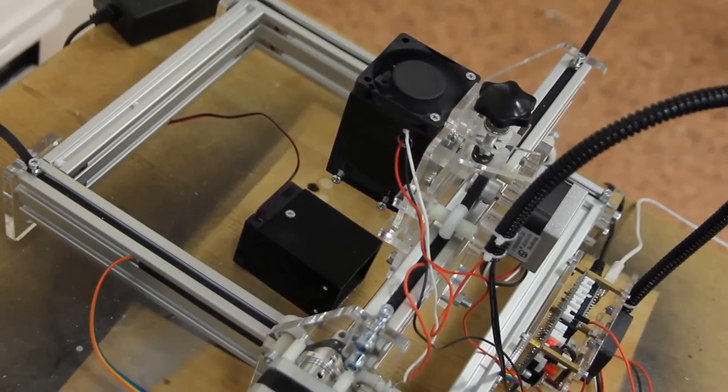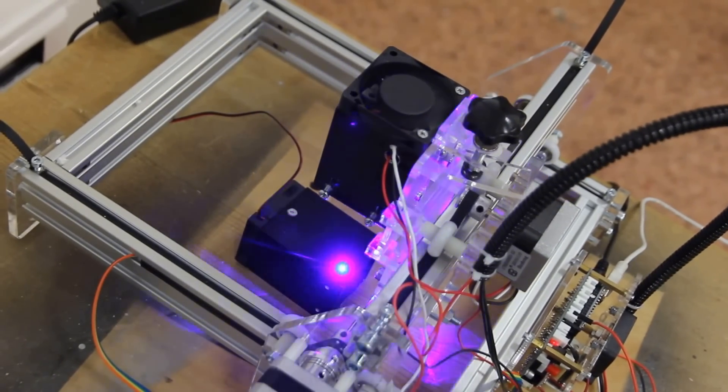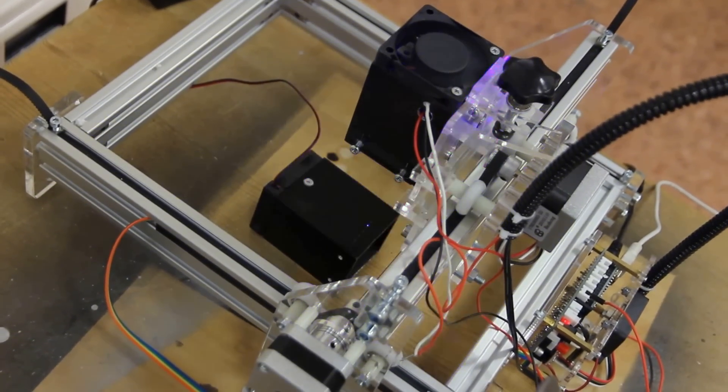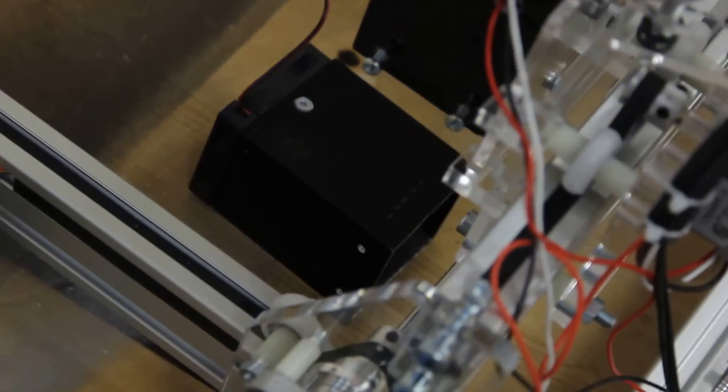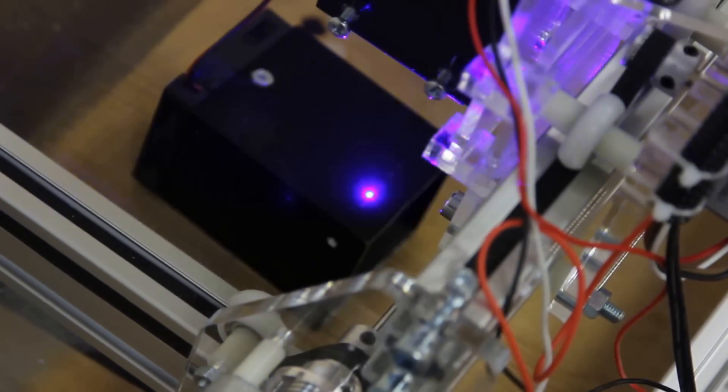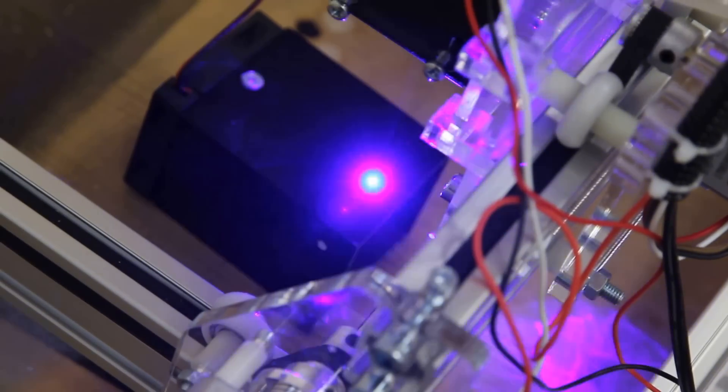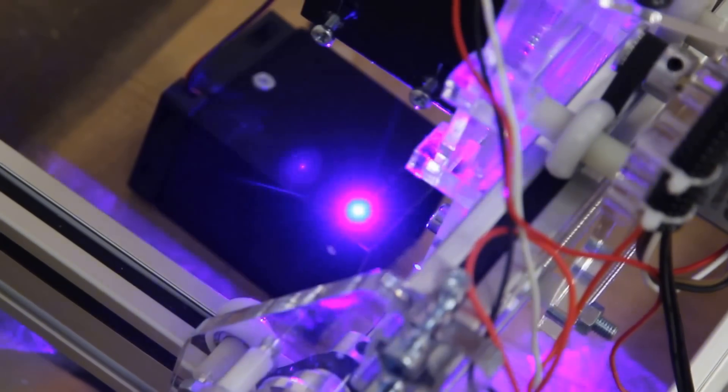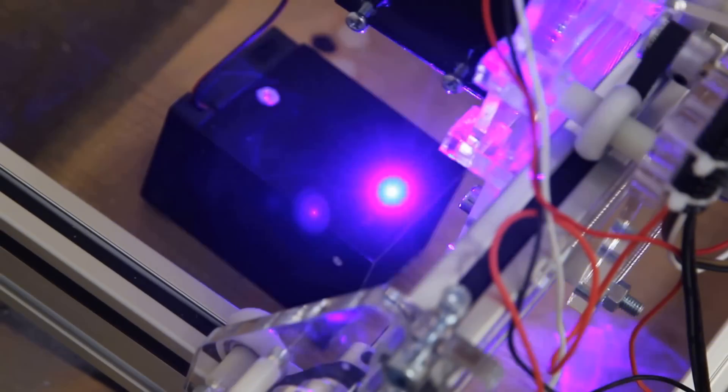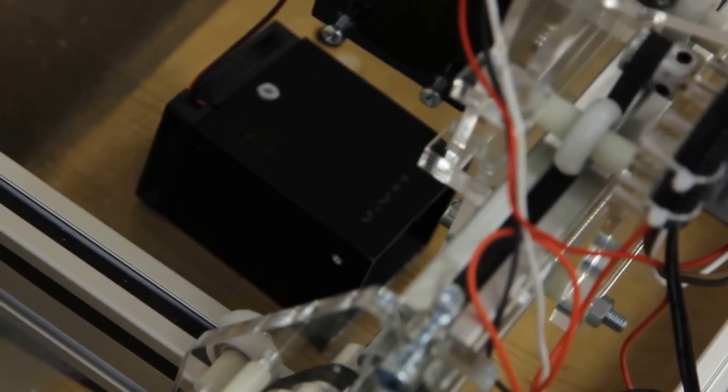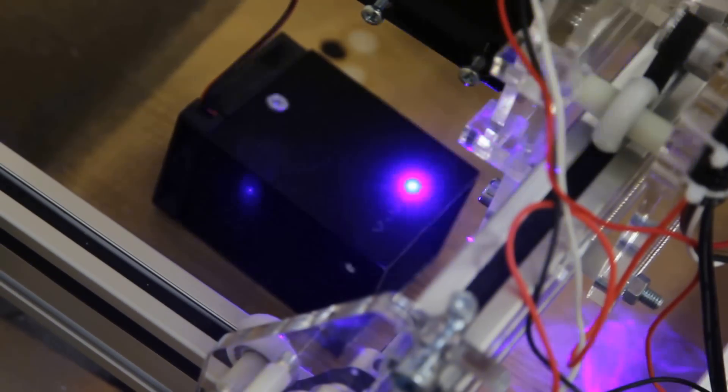This is a DIY engraving machine with a 5.6 watt diode laser assembled by Endurance. You can see that it does pretty well and works pretty fast, taking about a minute or so to engrave this piece.